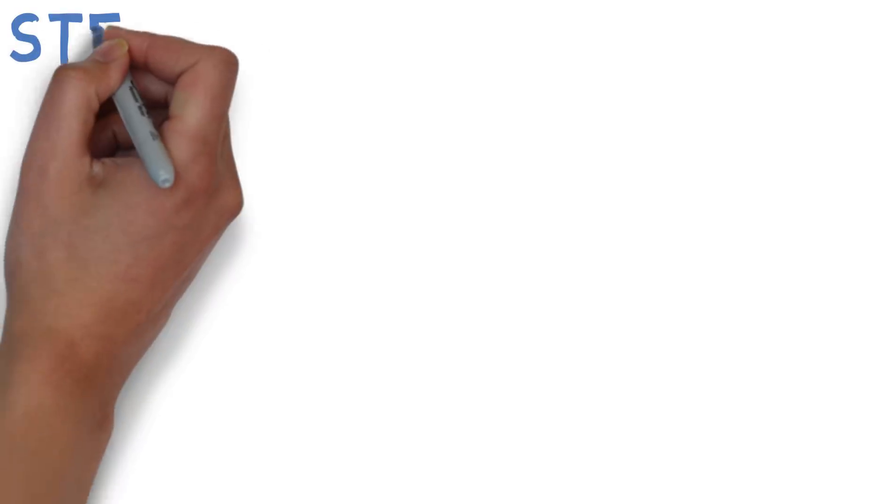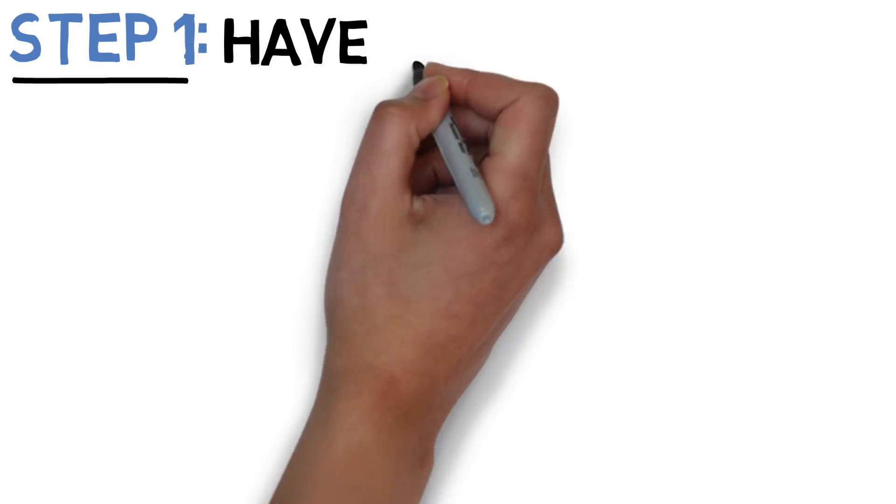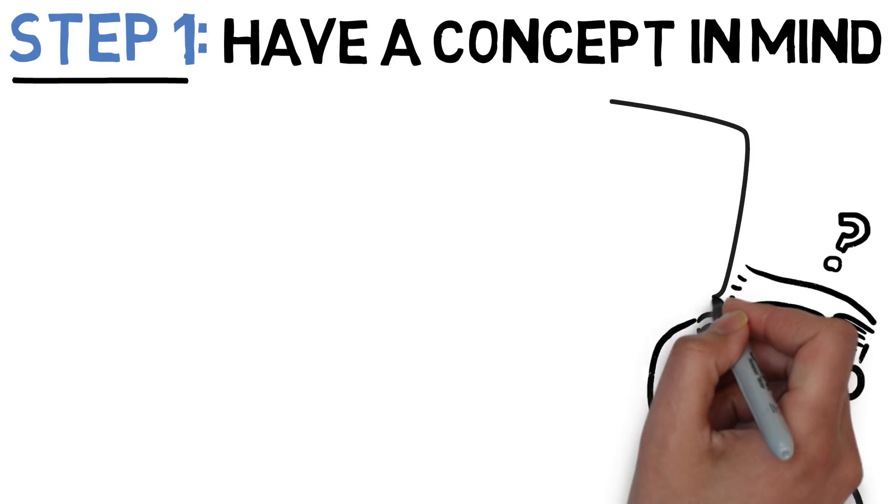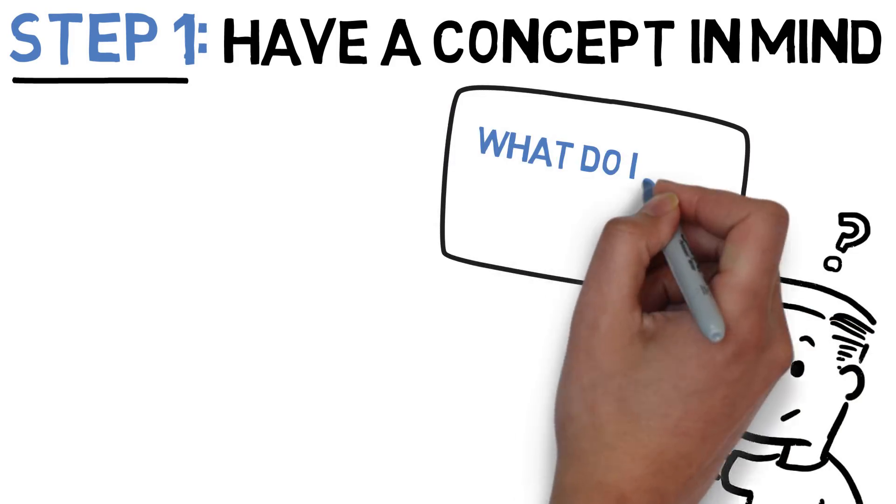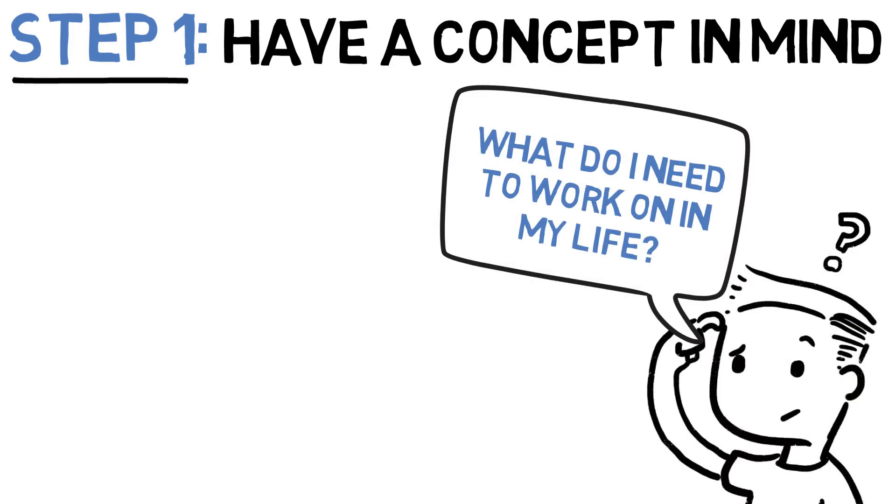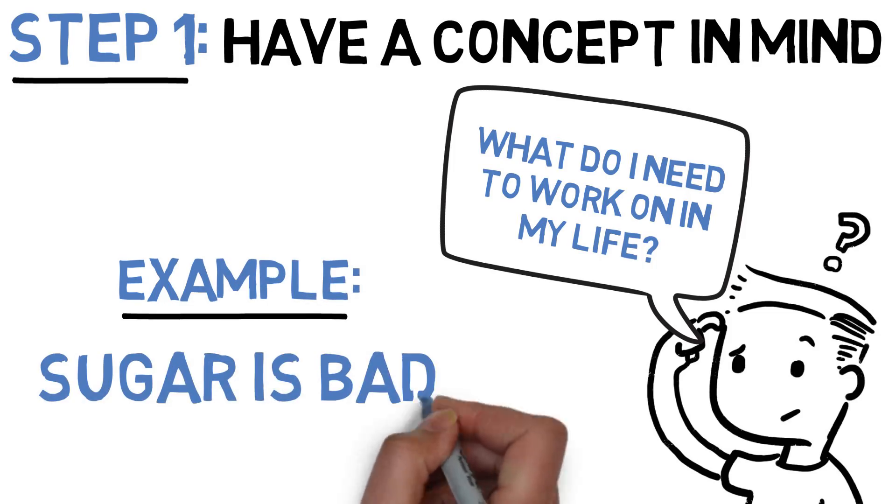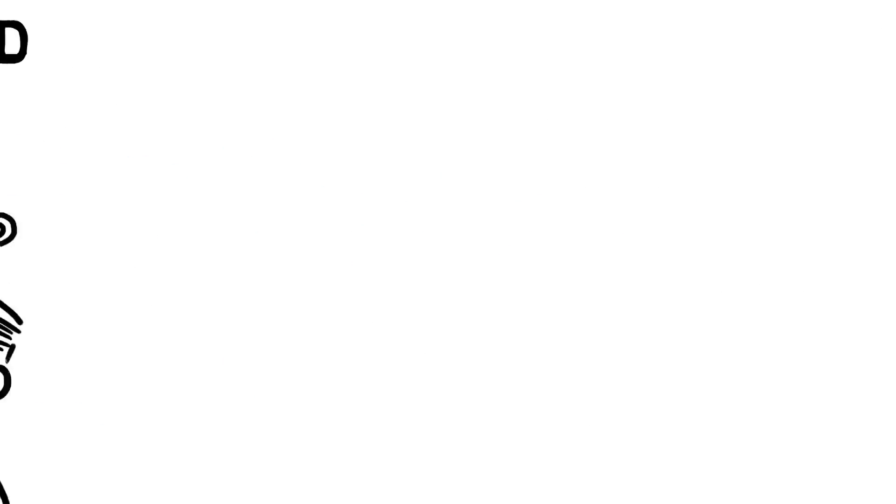There are five steps. The first step is to have a concept in mind that you want to learn properly. What is a concept that you know you should follow, but you have a really hard time doing? Let's say, for example, you're trying to lose weight and you know one thing you should stay away from is sugar. One of the concepts you should learn properly is why sugar is bad.